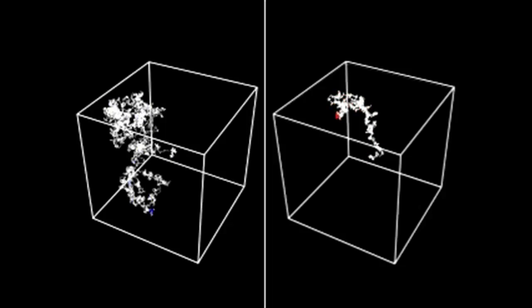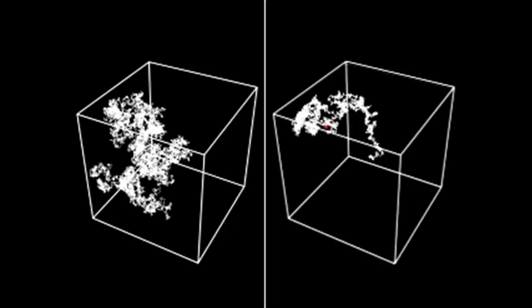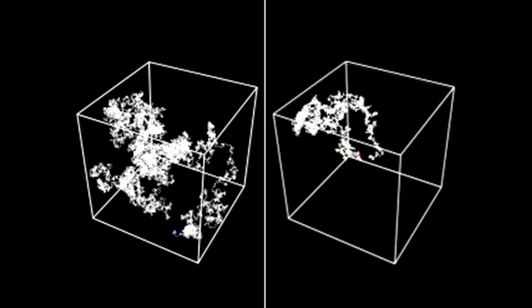Note that the paths of the molecules in the second simulation are different from those in the first, thus showing the randomness of Brownian motion.